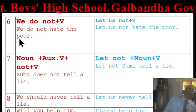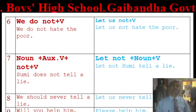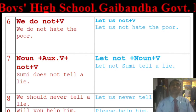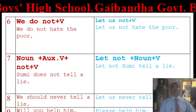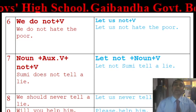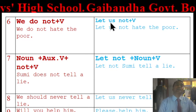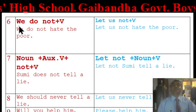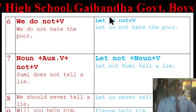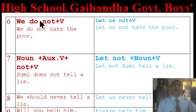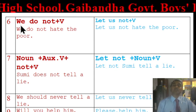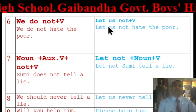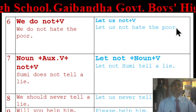Remember this important point: when you find an assertive sentence with a first-person or third-person subject, you must use 'let' at the very outset of the imperative sentence, and then use the objective form of the subject word. Here the subject is 'we', so we use the objective form 'us'. So 'We do not hate the poor' becomes 'Let us not hate the poor.'